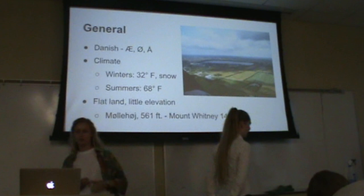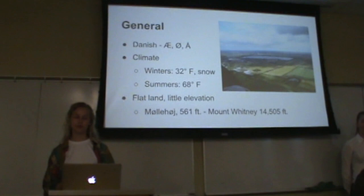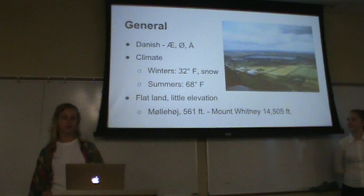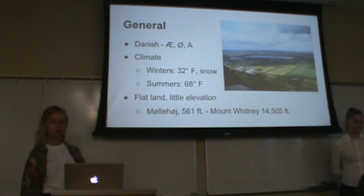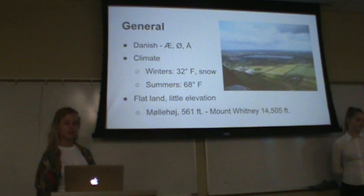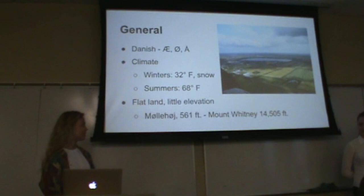In Denmark we speak Danish, where the alphabet is pretty much the same as the American one, except we have some extra letters. The climate is much colder than in California. In the winters it's usually snowy and around 42 Fahrenheit. In the summers it gets warmer, mostly around 68 Fahrenheit. The elevation in Denmark is very little — it's very flat. The highest natural point is Møllehøj, which is 561 feet, and the highest point in California is about 100 times as high.